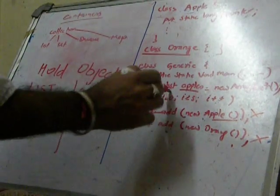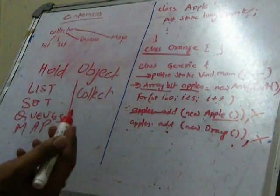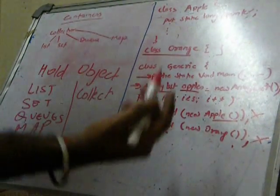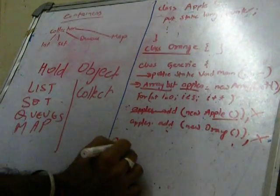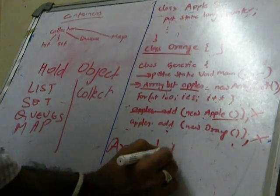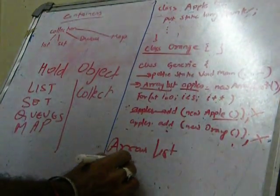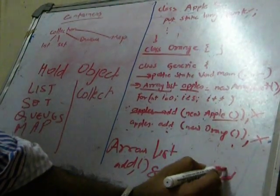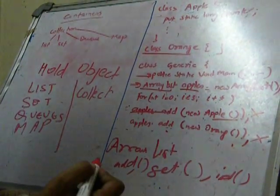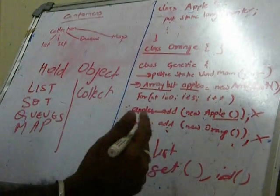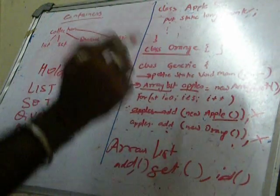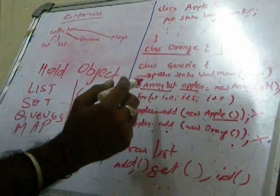I have used ArrayList, ArrayList is another container which is similar to arrays but the difference is whenever we access ArrayList we have a set of methods like add, get and id. These are the methods in ArrayList compared to array where we have to use iterator every time to access something.